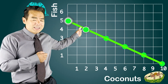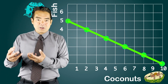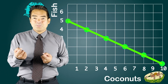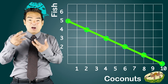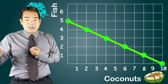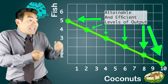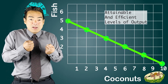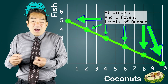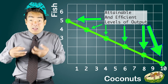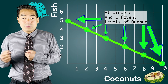Any point inside the PPC represents a possible or attainable level of output, but an inefficient one. The points on the production possibilities curve are special because they represent combinations of fish and coconuts that are both attainable and efficient — we're not wasting any resources, and none of the factors of production are sitting idle or going unused.